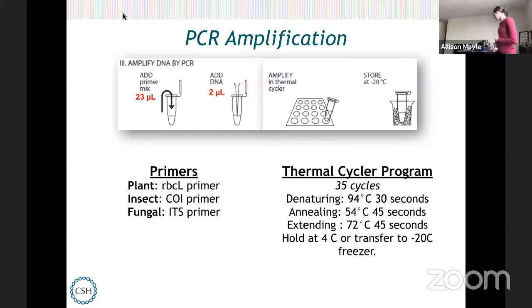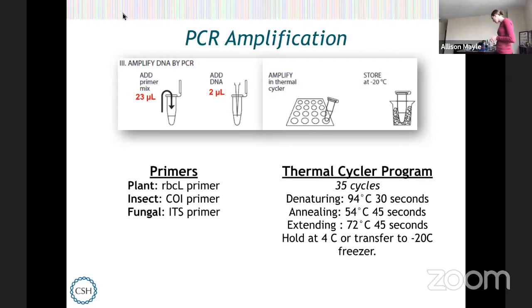When I'm done with this video I'll plug this in and run a program from my laptop. That machine is actually going to heat up to 94 degrees for 30 seconds to allow all the DNA to be denatured, then cool down to 54 degrees for about 45 seconds to allow the primers to anneal, then heat back up to 72 degrees Celsius for 45 seconds to allow the primers to extend the copies of DNA. At the end, we're going to hold at four degrees Celsius — about the temperature most refrigerators are at — or you could put it in a freezer at around minus 20 degrees Celsius for longer-term storage.